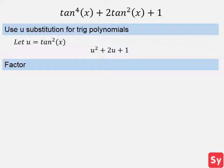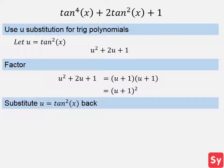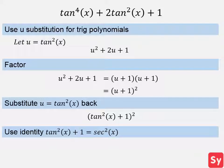Next, we can factor and we get that this quadratic equals (u plus 1) times (u plus 1), which is (u plus 1)². Next, we sub tan²(x) back in. Now we can use this identity. So we get sec²(x) squared, which simplifies to sec⁴(x), which is our answer.